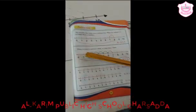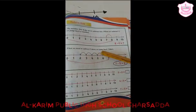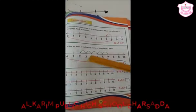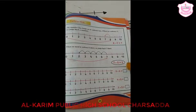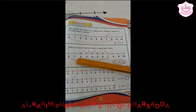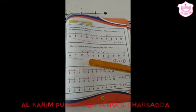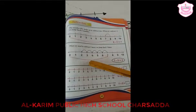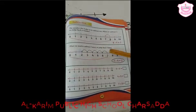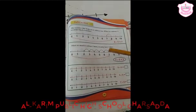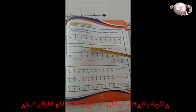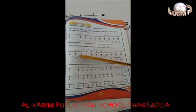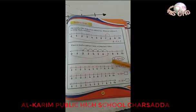When we need to subtract five, we jump back five times. Seven minus five: start from zero, go to seven on the line. Now jump back five times — one, two, three, four, five. The answer is two. Seven minus five equals two.